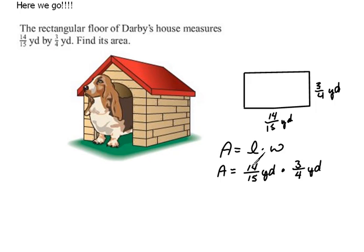The 4 and 14 have a 2 in common: 2 goes into 4 twice and into 14 seven times. Then the 3 and 15 have something in common: 3 goes into 3 once and into 15 five times.